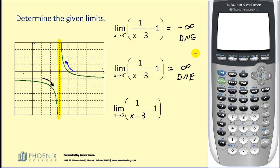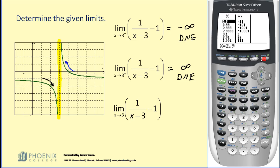I'd like to take a moment and verify these two one-sided limits in the table feature of the graphing calculator. I've already typed in the function into y1. Now I'm going to hit second graph. These first four rows of x values approach positive 3 from the left, and by looking at the y values, we can easily see that they would be approaching negative infinity. These last three rows approach positive 3 from the right, and by looking at the y values, we can see that it would be approaching positive infinity.